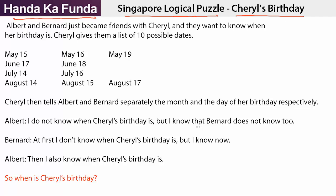I'll try and explain the solution for this. We are given that Albert and Bernard just became friends with Cheryl and they want to know when her birthday is. Cheryl gives them a list of ten possible dates, which are given here. Cheryl then tells Albert and Bernard separately the month and the day. So Albert knows the month — Albert has heard May, June, July, or August, so Albert has four options.